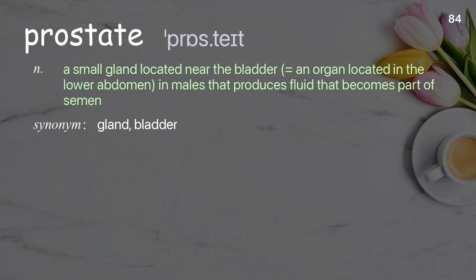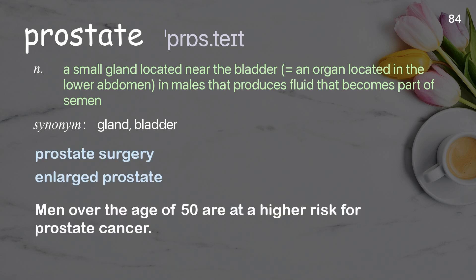Prostate: a small gland located near the bladder in males that produces fluid that becomes part of semen. Examples: prostate surgery, enlarged prostate. Men over the age of 50 are at a higher risk for prostate cancer.